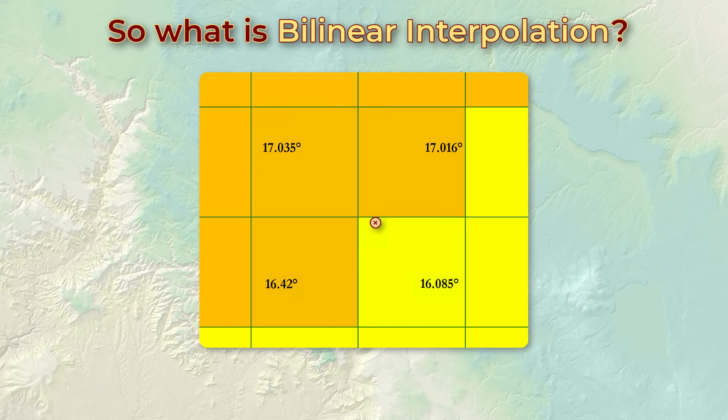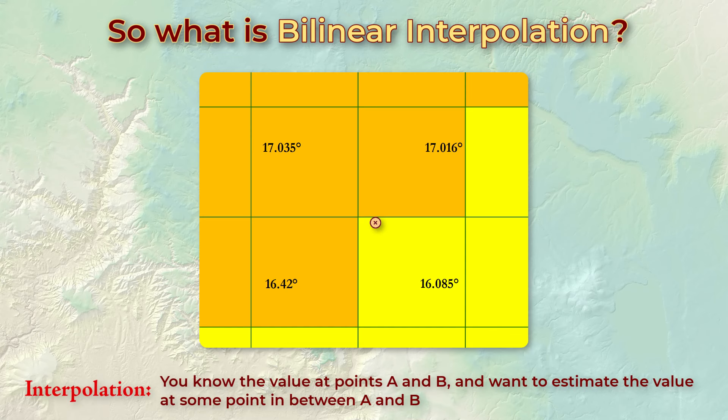Well, bilinear interpolation works like this. First, understand the interpolation means you know the values at two or more locations, and you want to estimate the value at some location in between those known values.